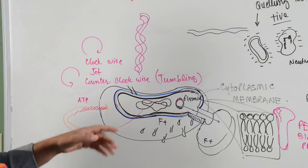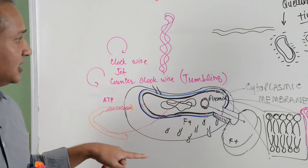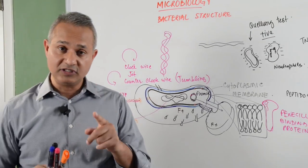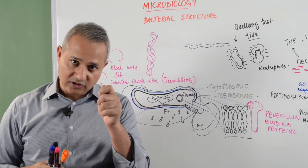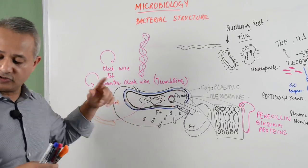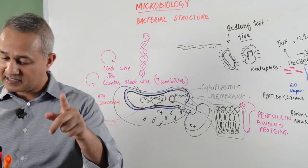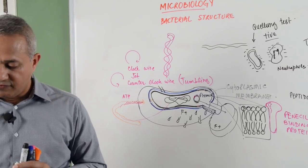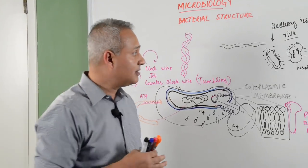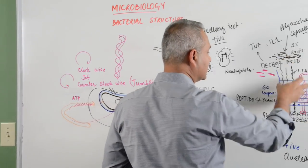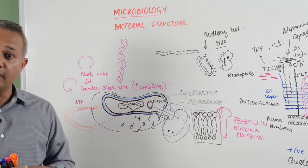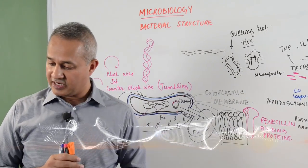Flagella are made up of proteins. They have motors at their bases which use ATP to rotate them — they are active energy-consuming systems. Some bacteria can also secrete a glycocalyx outside, which makes biofilms.